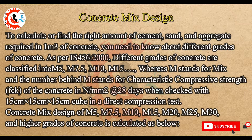As per IS456-2000, different grades of concrete are classified into M5, M7.5, M10, M15, where M stands for mix and the number behind M stands for characteristic compressive strength FCK of the concrete in Newton per mm² at 28 days when checked with a 15 cm × 15 cm × 15 cm cube in a direct compression test.